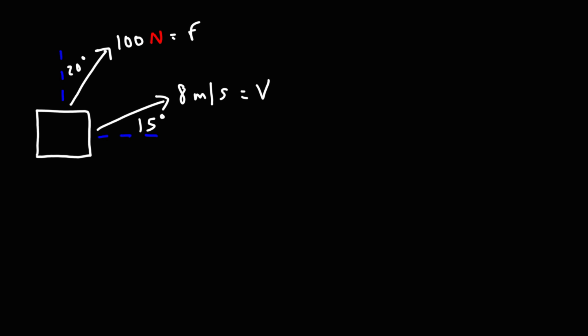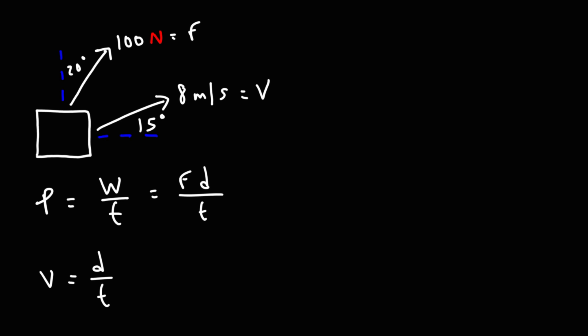Feel free to pause the video if you want to try it. Power is equal to work divided by time. We know that work is simply the transfer of energy, so power represents the rate at which energy is being transferred. Work is force times displacement, and velocity is equal to displacement divided by time, so we can replace d over t with v. Therefore, power is force times velocity.